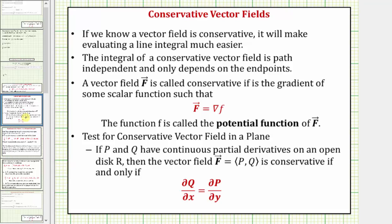For a quick review, if we know that a vector field is conservative, it'll make evaluating a line integral much easier. The integral of a conservative vector field is path independent and only depends on the endpoints. A vector field F is called conservative if it is the gradient of some scalar function little f such that the vector field F equals the gradient of little f, and f is called the potential function of the vector field F.